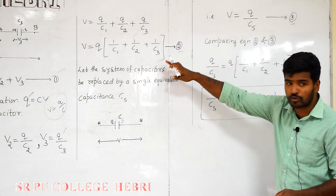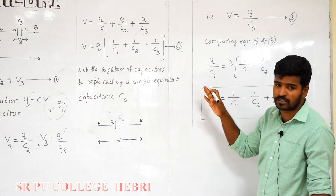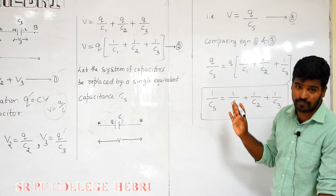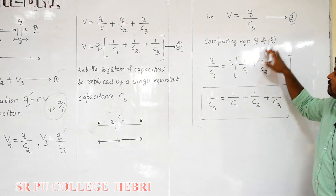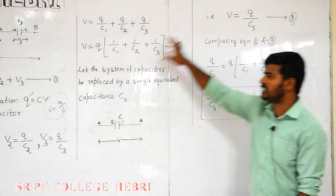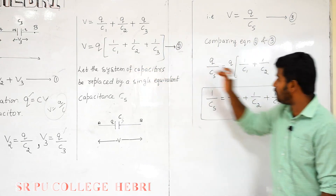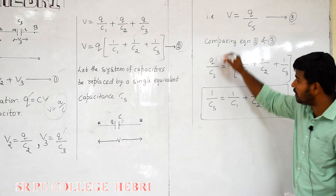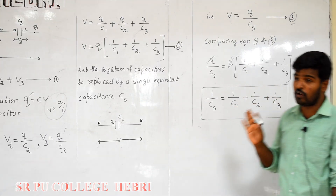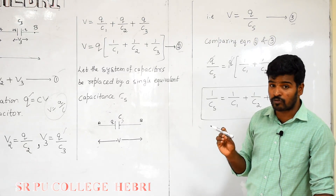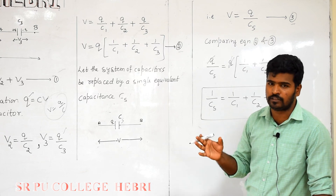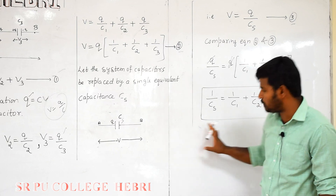Comparing equation number 2 and equation number 3: equation 2 is V = Q × (1/C1 + 1/C2 + 1/C3) and equation 3 is V = Q/Cs. Since the left-hand sides are equal, we get Q/Cs = Q × (1/C1 + 1/C2 + 1/C3). Cancelling Q from both sides, we obtain: 1/Cs = 1/C1 + 1/C2 + 1/C3. This is an important 3 or 5 mark question for board exams.